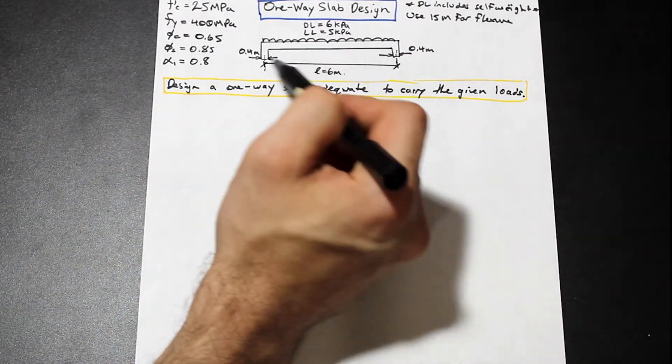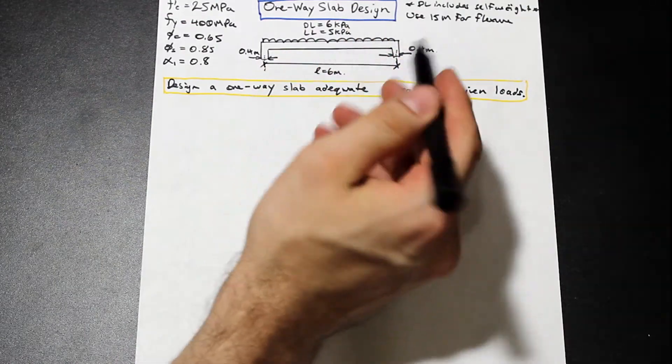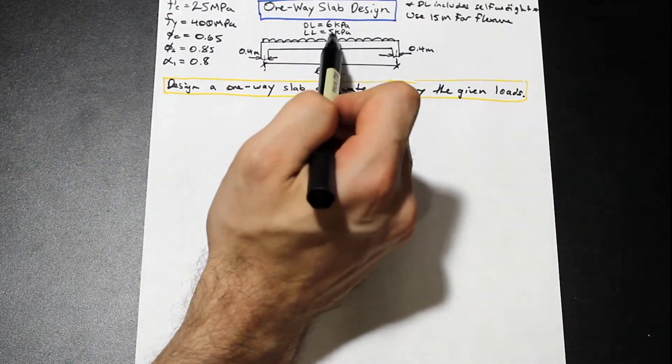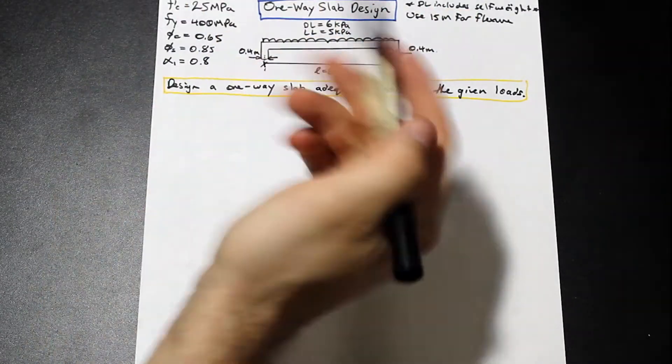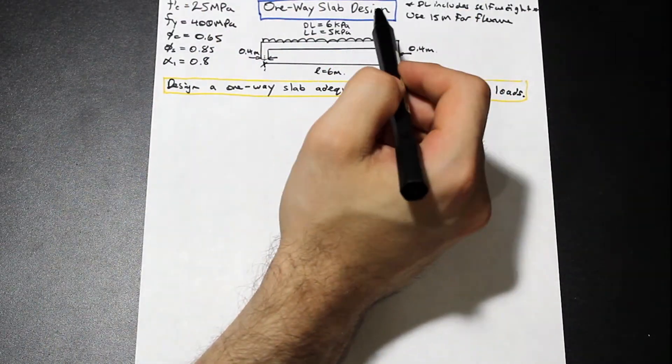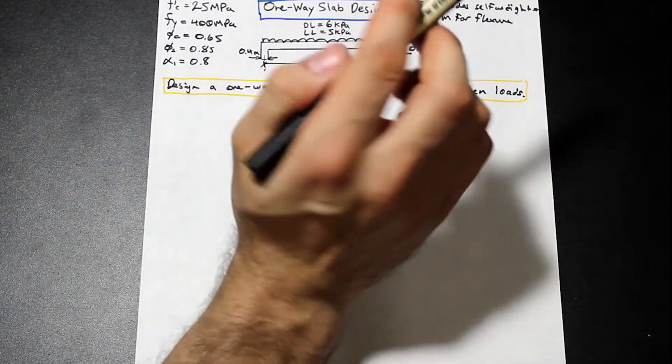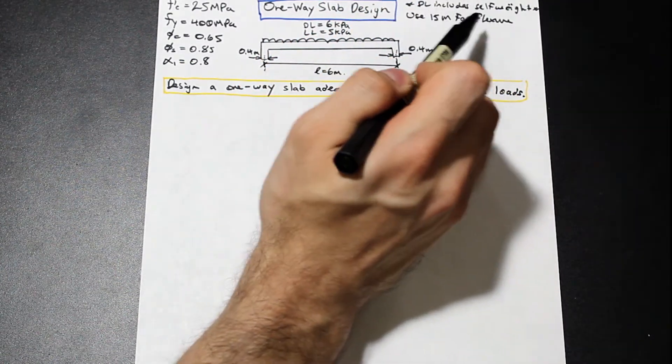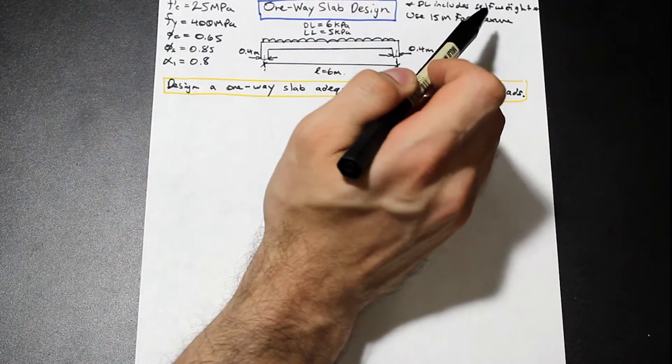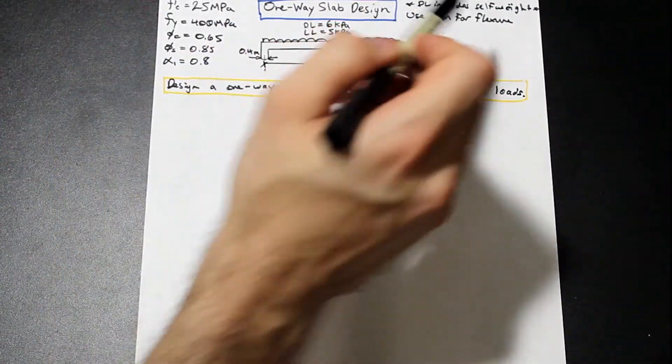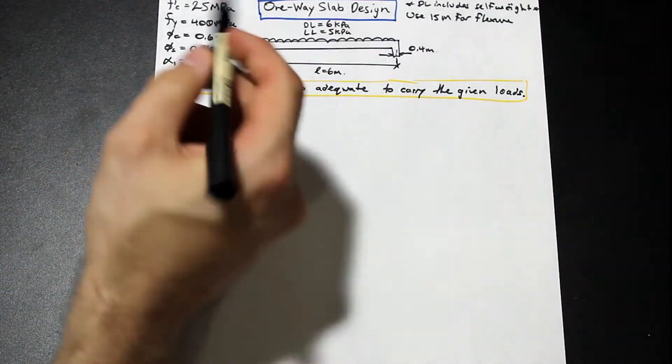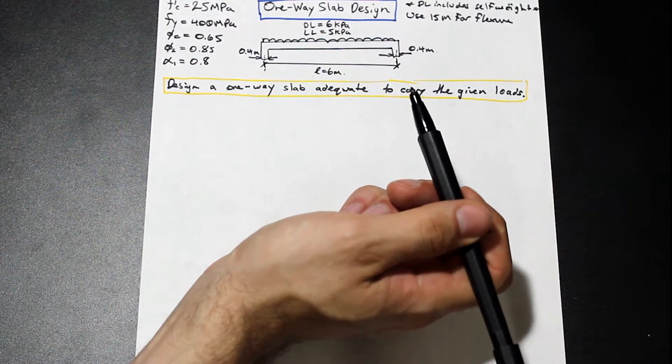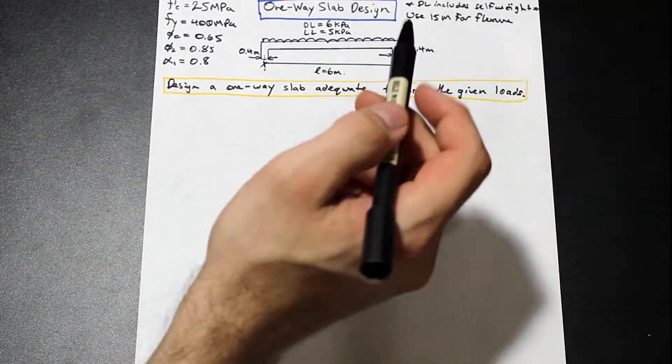We have a one-way slab here and this is probably how you'll see it in your book. It looks like a beam, but as you'll see, the dead load and the live load are given in kPa, so kilonewton per meter squared. Think of this as a slab that's going into the page there. The dead load that we have here includes the self-weight of the slab. We're going to use 15M bars for flexure. So 15M is 15 millimeter nominal diameter bars. That's a Canadian standard. We have F'c is 25 MPa, Fy, and we have all these variables here for our steel properties and our concrete. We're asked to design a one-way slab adequate to carry the given loads.